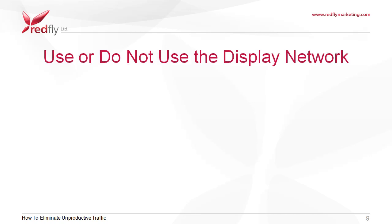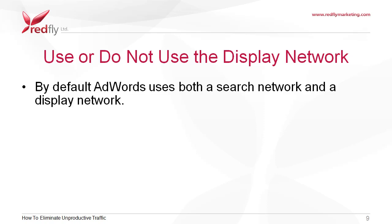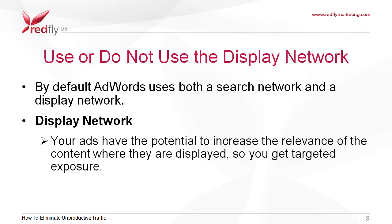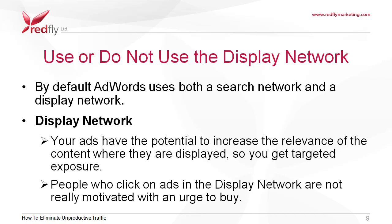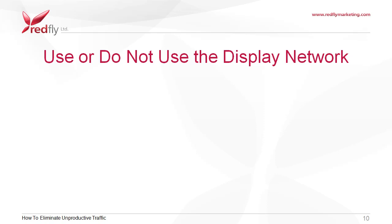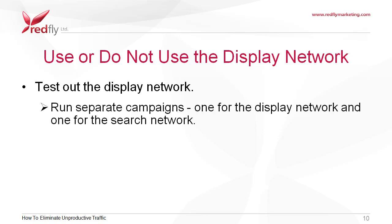Use or do not use the display network. By default, AdWords uses both a search network and a display network. On the display network, your ads have the potential to increase the relevance of the content where they are displayed, so you get targeted exposure. But people who click on ads on the display network are not really motivated with an urge to buy. In order to decide whether or not to use the display network, you should test it and figure out if it works for you. Do this by running separate campaigns, one for the display network and one for the search network.